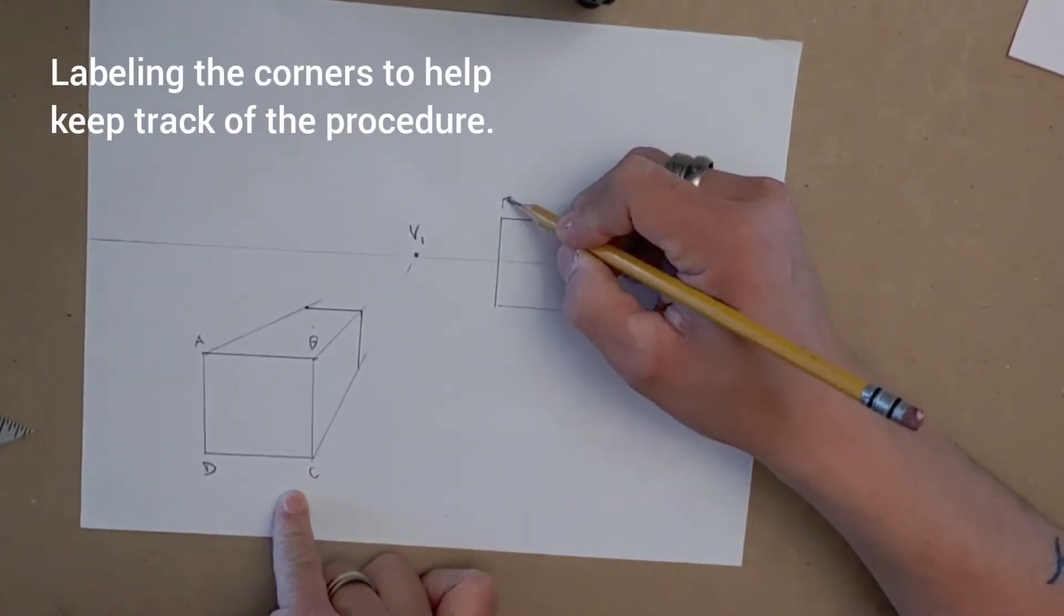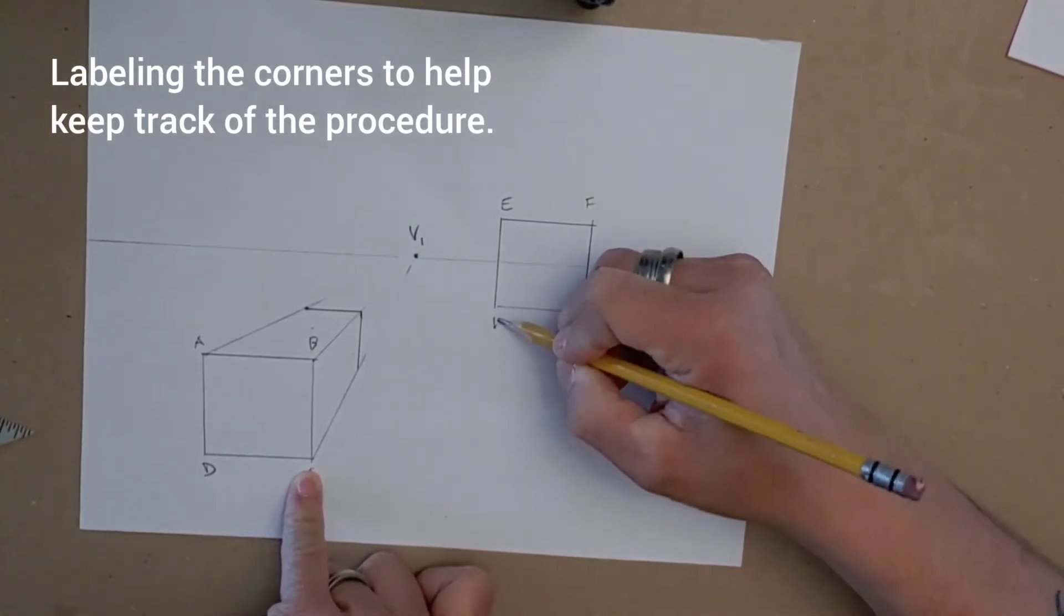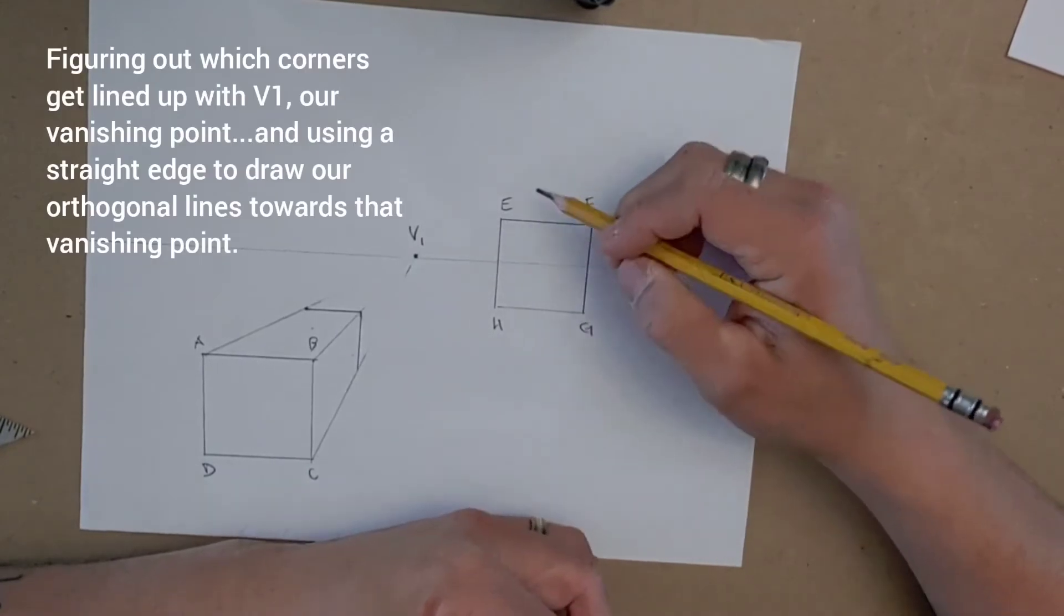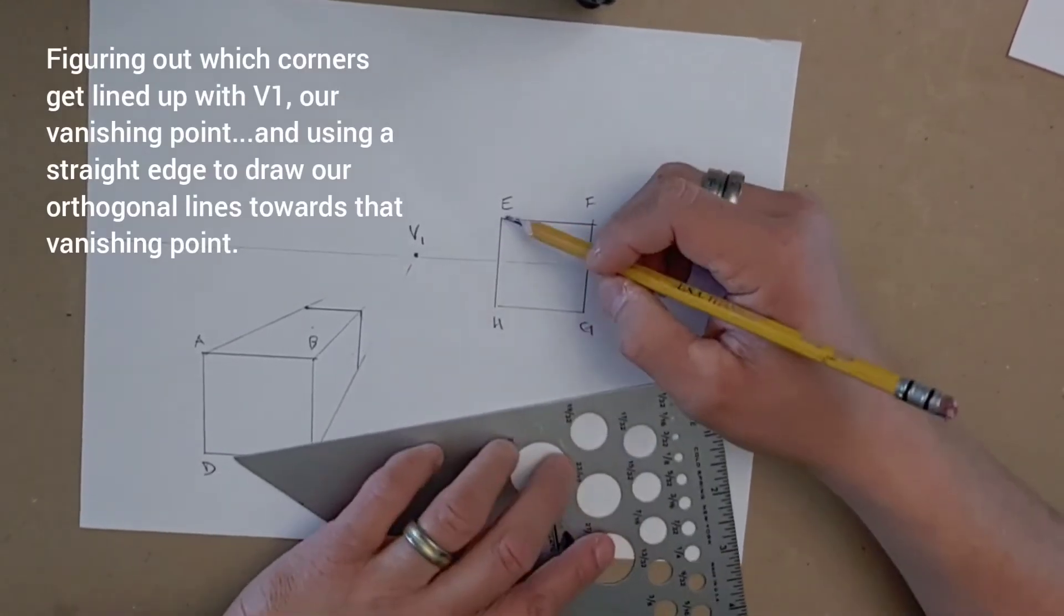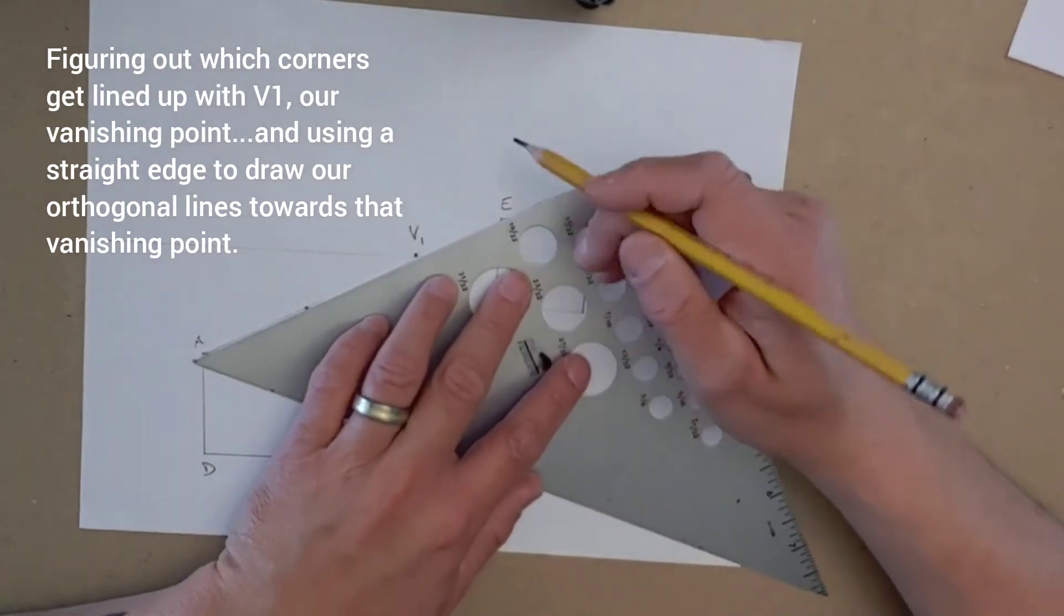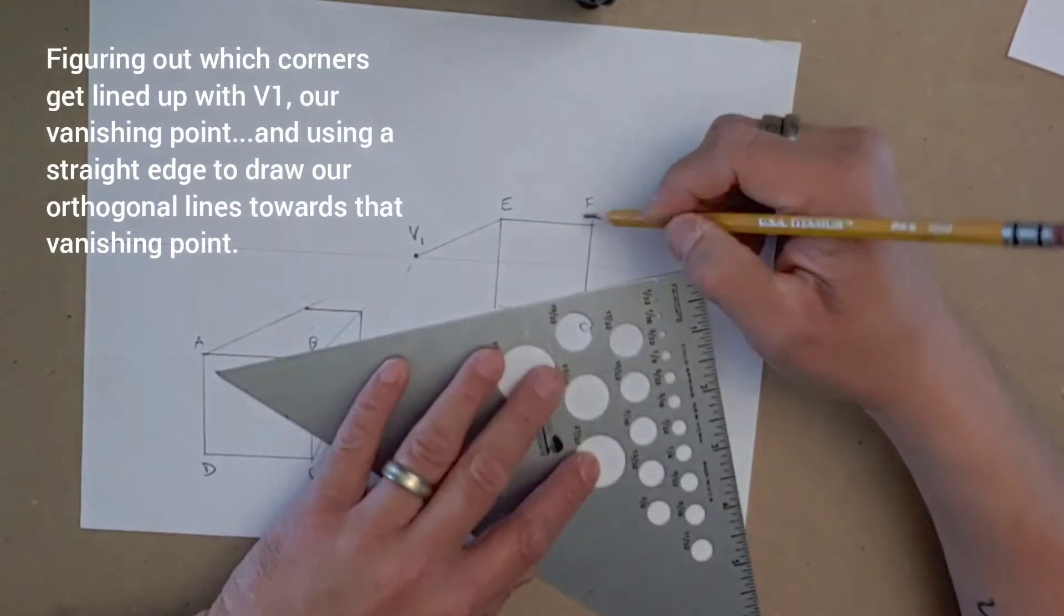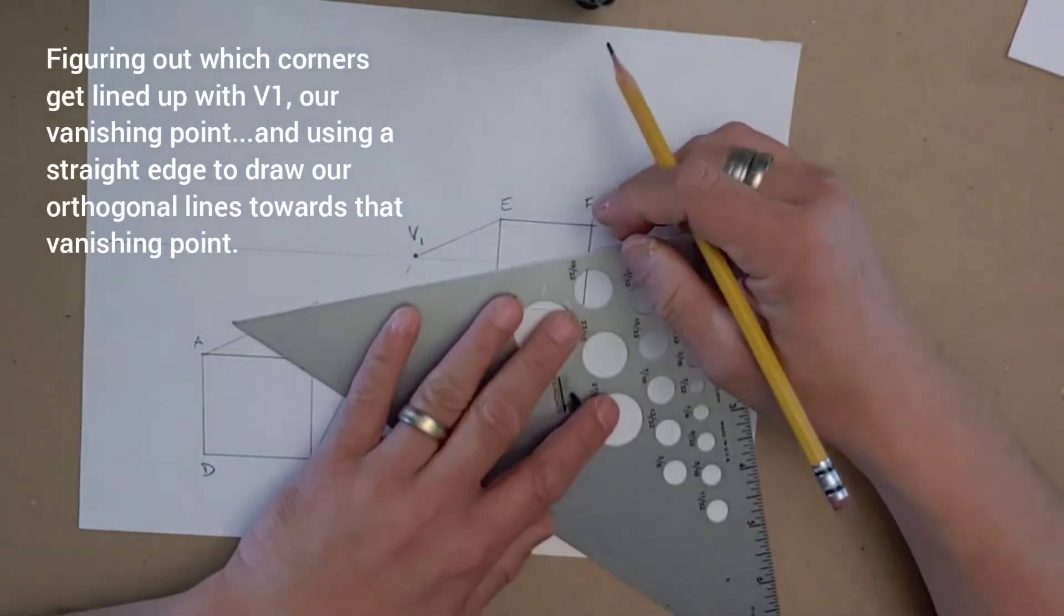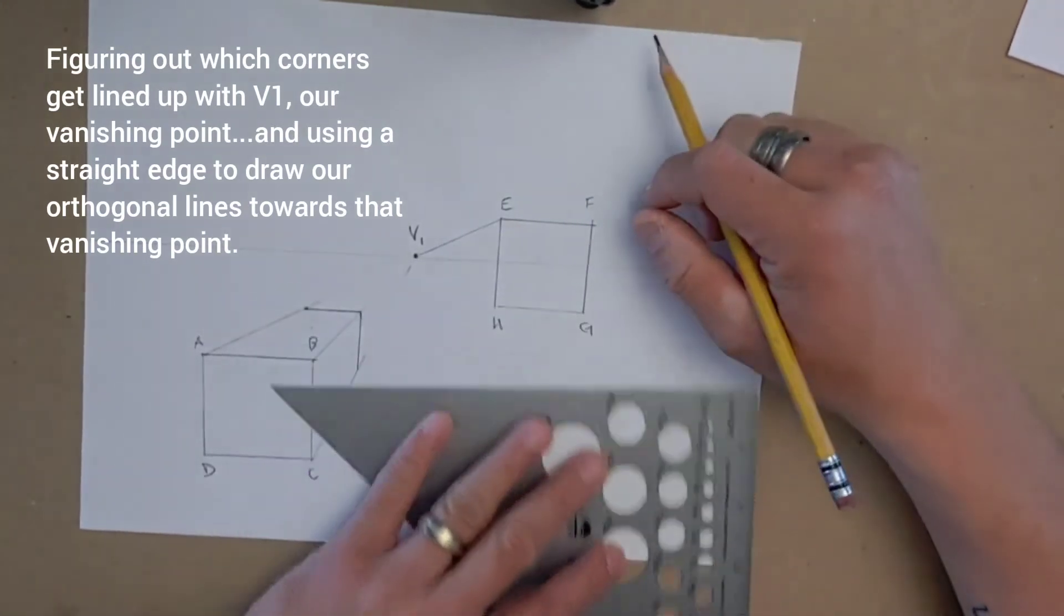And I will now name that shape. We'll start off with the alphabet here where I left off: E, F, G, and H. Now I'm tasked with trying to find out which corners go to V1. If I ask myself if E goes to V1, nothing blocking that path. So yes, E will get connected to V1 using my ruler. If I try to connect F with V1, you'll notice that I'm cutting through my original shape. So that's not going to count. I'm not going to need that.